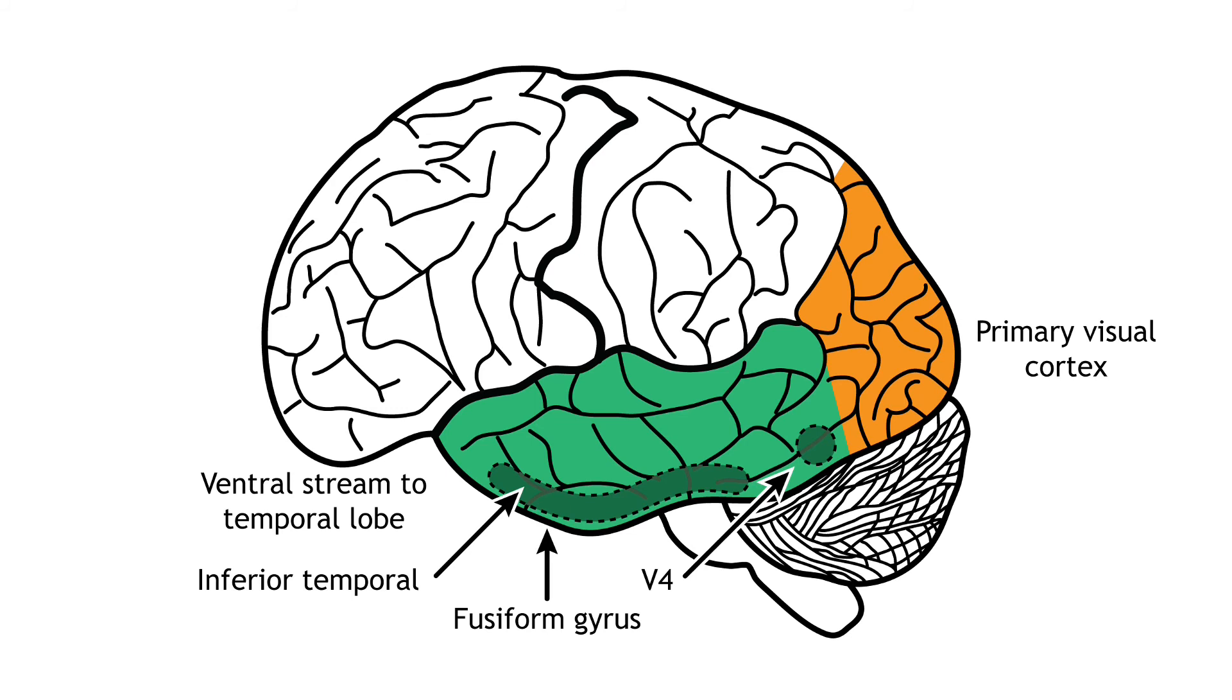As visual information continues to be processed through the inferior temporal lobe, differentiation of objects occurs. For example, in a region called the fusiform face area, located in the fusiform gyrus, which lies on the ventral aspect of the temporal lobe, neurons are activated by faces and can be specialized to one specific face.